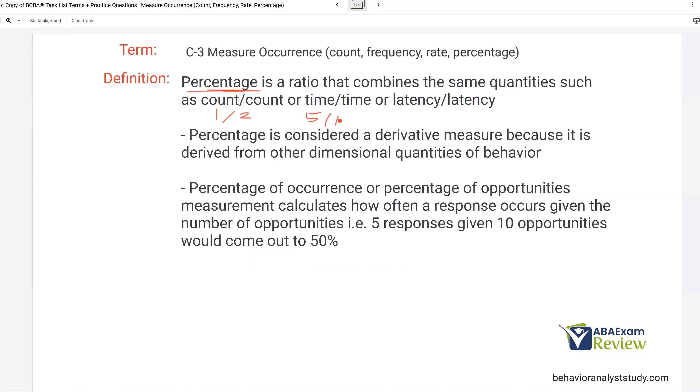It's just simply a ratio where you're combining the same quantities, finding your percentage. Percentage is considered a derivative measure because it is derived from other dimensional quantities of behavior. Not too important to know, but it's good to just be aware of that fact. And then percentage of occurrence or percentage of opportunities measurement calculates how often a response occurs given the number of opportunities. For example, we have five responses given 10 opportunities, our percentage of occurrence is 50%. So ultimately percentage, you've got to know how to do it. If you don't know how to find percentage, you need to learn just like you need to learn averages. These are simple calculations that you've got to be able to do fairly quickly and without much thought.